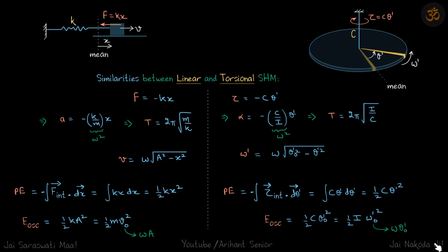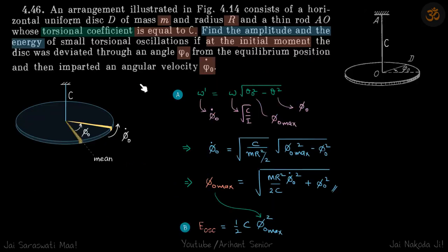Now let's look at the problem. We are given a disc whose torsional coefficient is c. Initially it is turned by an angle φ₀ and then given a further angular velocity φ₀-dot. We need to find the amplitude and the energy of the oscillations.